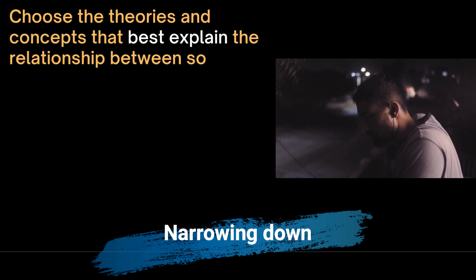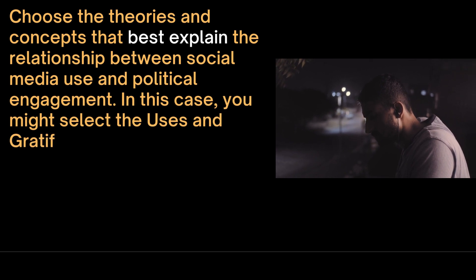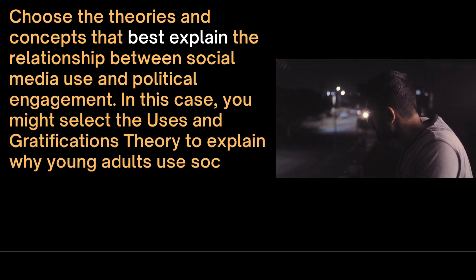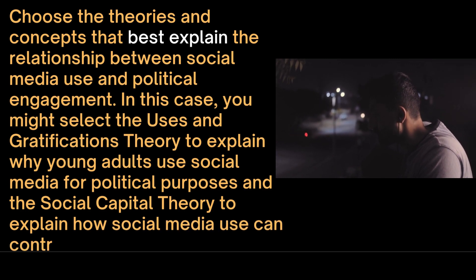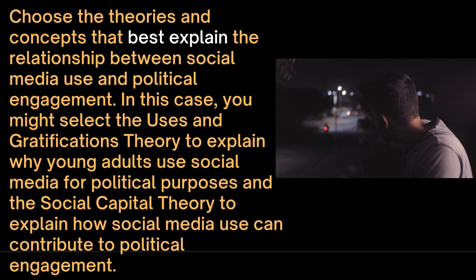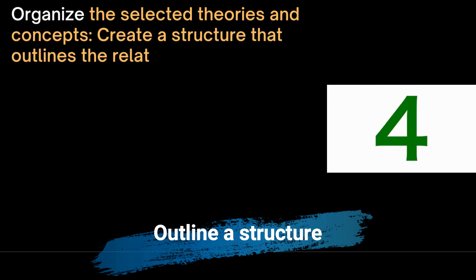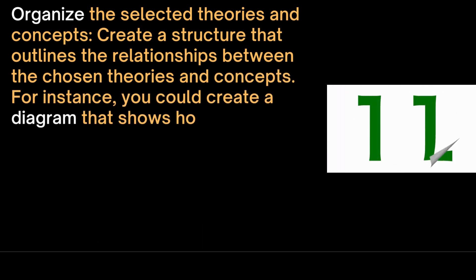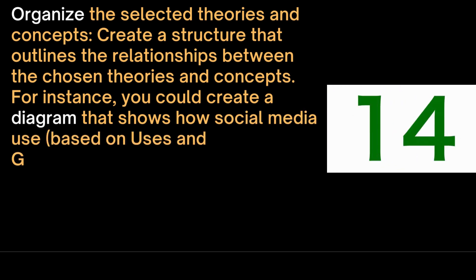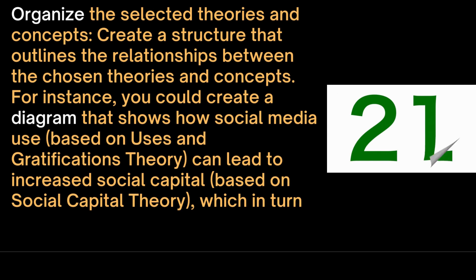We then choose the theories and concepts that best explain the relationship between social media use and political engagement. In this case, you might select the uses and gratification theory to explain why young adults use social media for political purposes, and the social capital theory to explain how social media use can contribute to political engagement. We then organize the selected theories and create a structure outlining the relationships between them. For instance, a diagram could show how social media use, based on uses and gratification theory, can lead to increased social capital, which in turn influences political engagement.